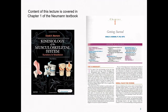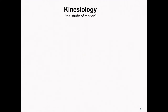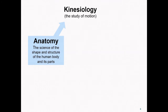The content of today's lecture is covered in chapter one of the Newman textbook. The foundational knowledge that we'll cover over the next few weeks relates to our goal of understanding human movement. We will draw heavily from three areas of scientific study. The first area that we'll draw from is anatomy — the science of the shape and structure of the human body and its parts.